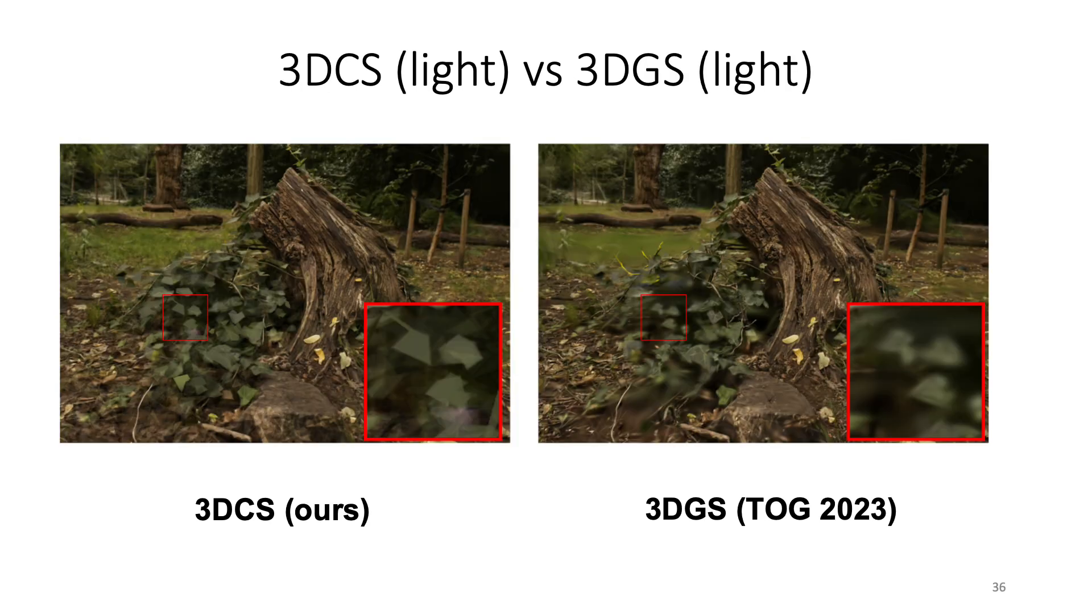Here we show additional comparison between our 3D Convex Splatting and 3D Gaussian Splatting, specifically when the number of shapes to represent the scene is reduced. And we can see that 3D Convex Splatting can model the high-frequency details better than 3D Gaussians, and offers a better and more realistic object decomposition as well.